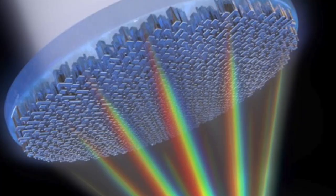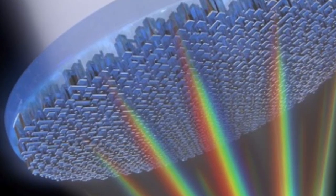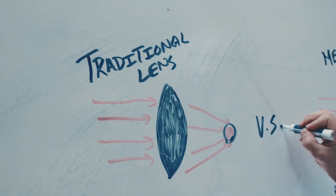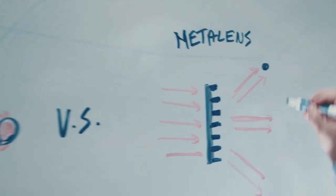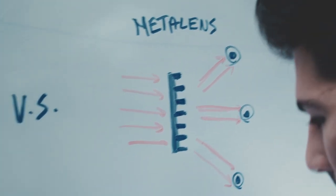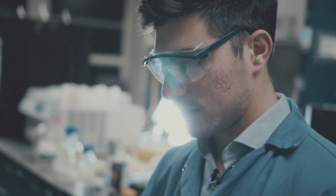Metalenses are different than traditional lenses because they allow for better design of how we want the light to bend when passing through it. For example, light can only move in a set direction in a traditional lens, but by altering the material properties and the size of the nanostructures on the metalens, we have a lot more freedom of how we want the light to move.